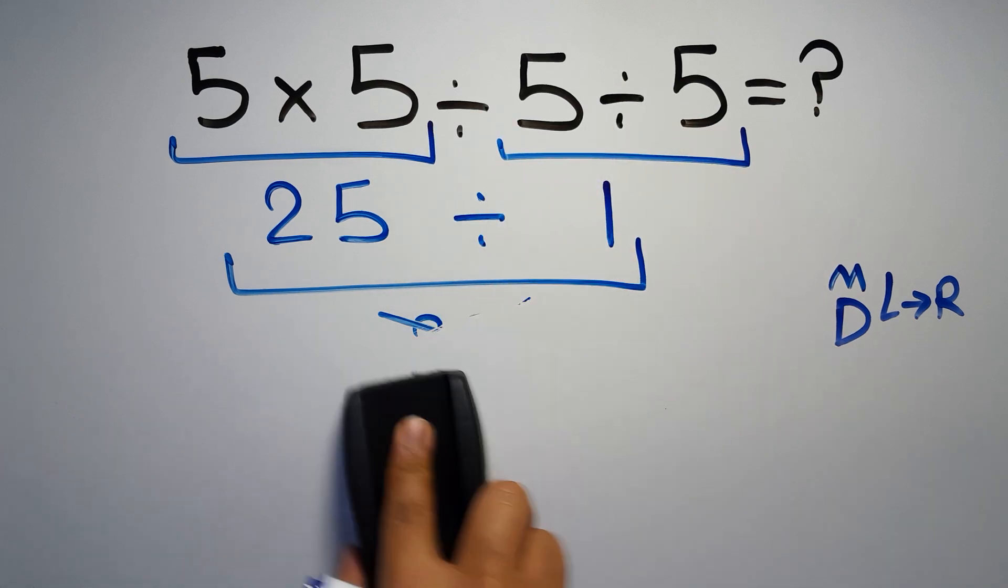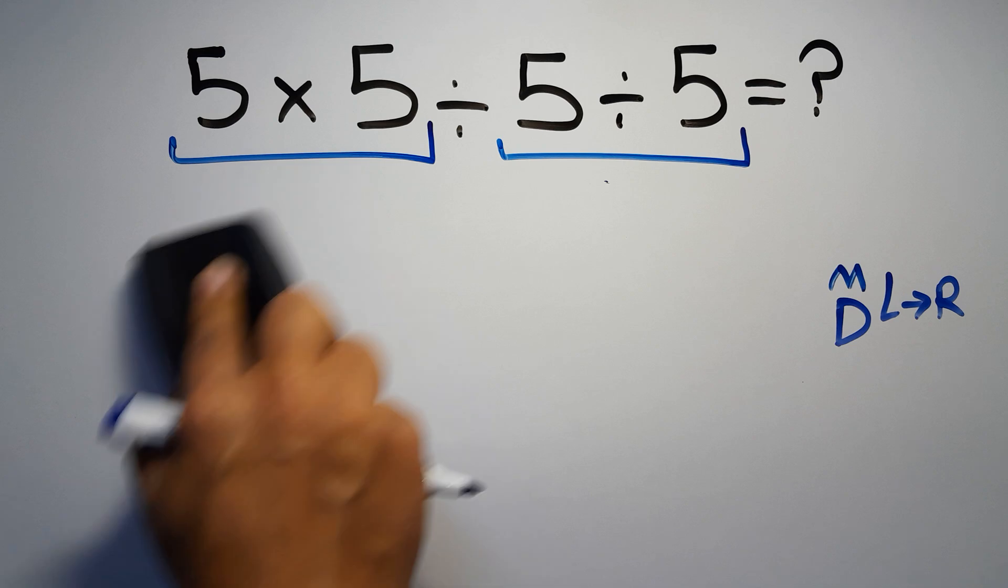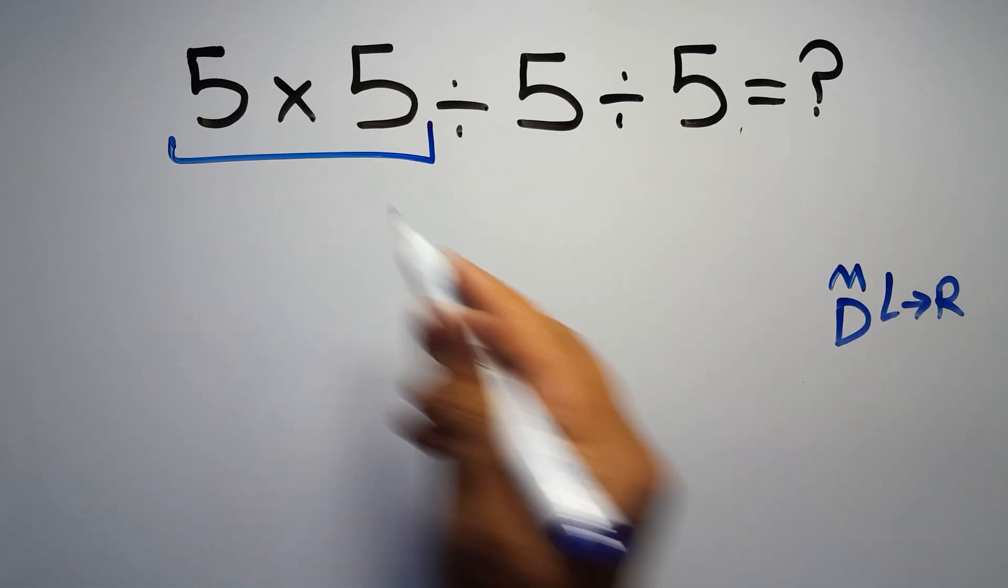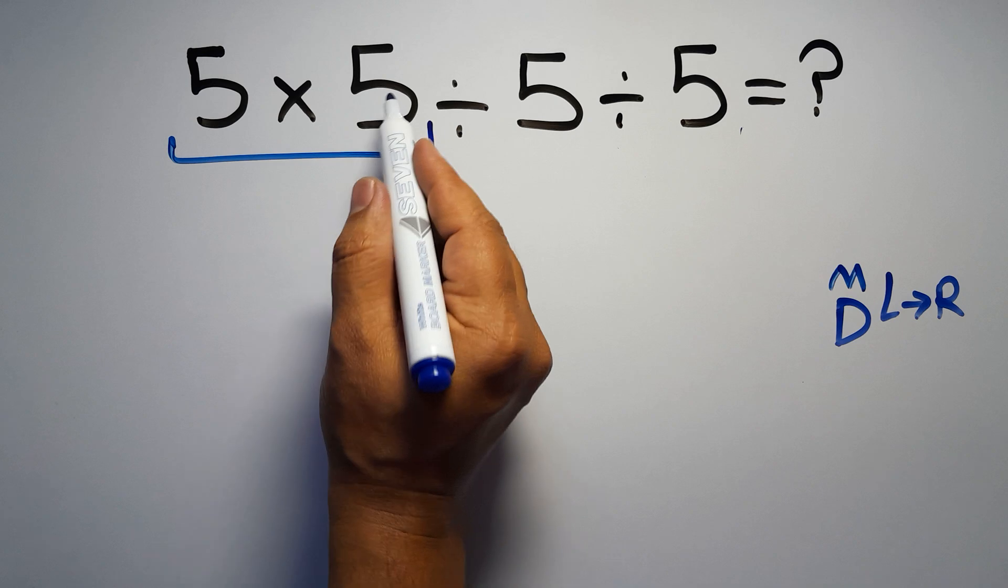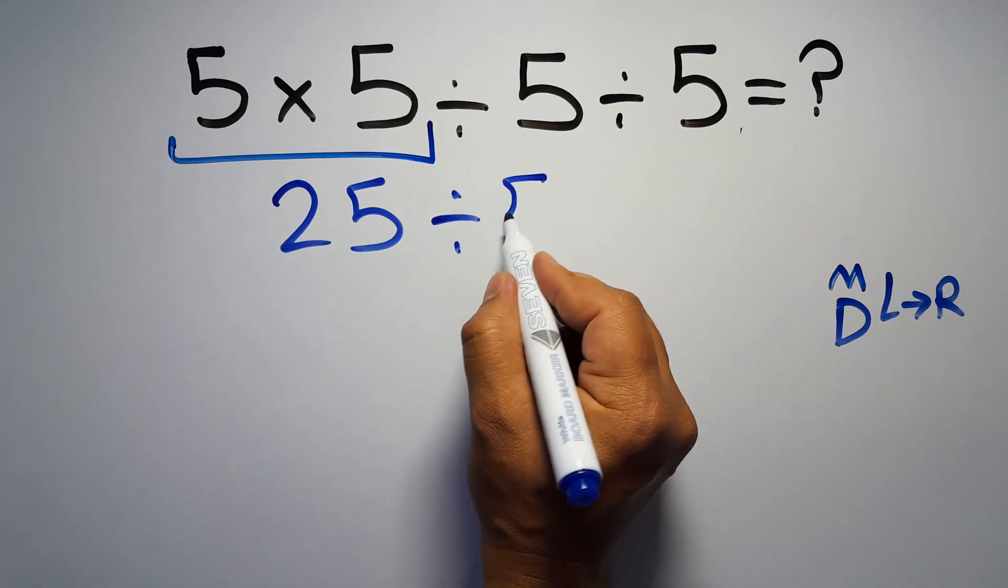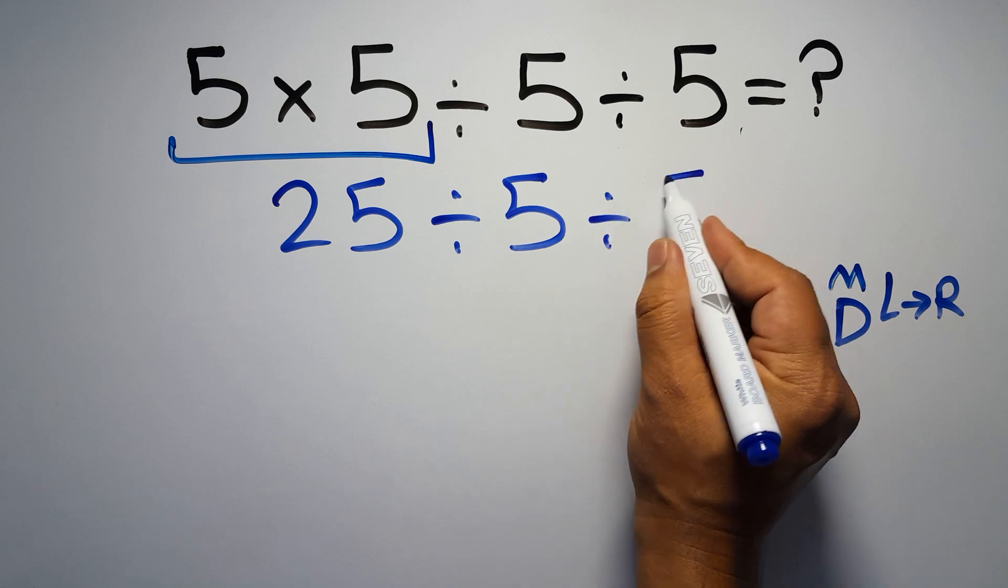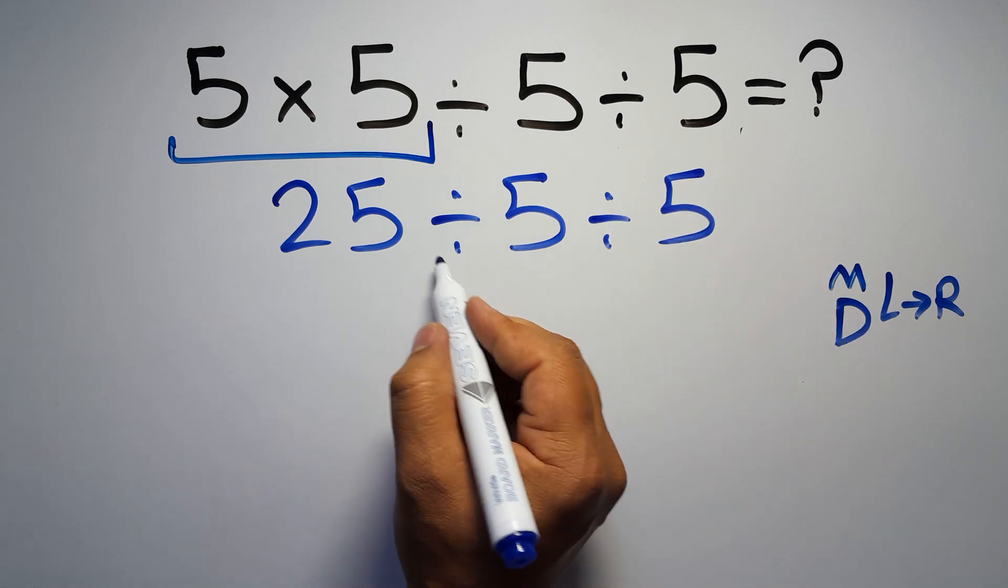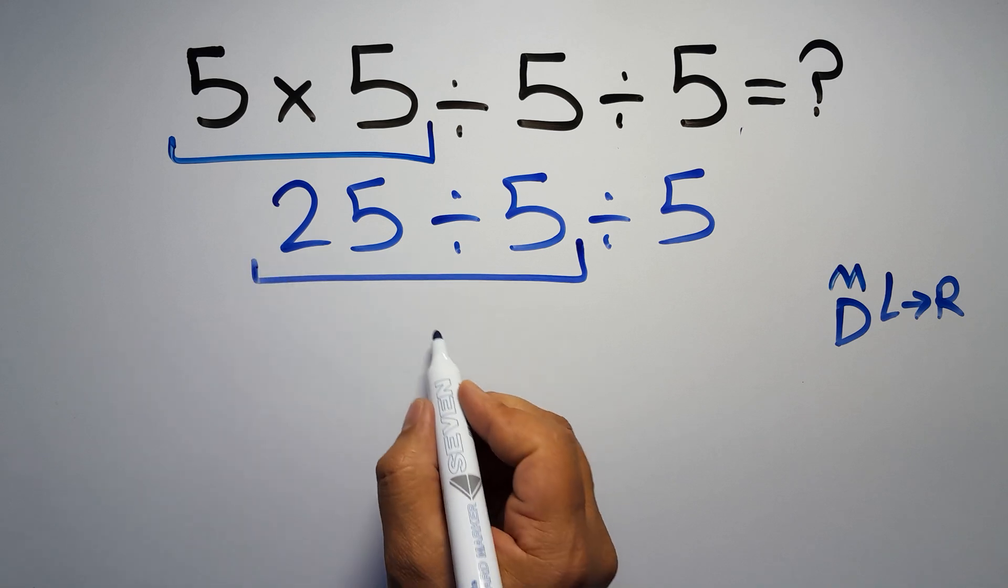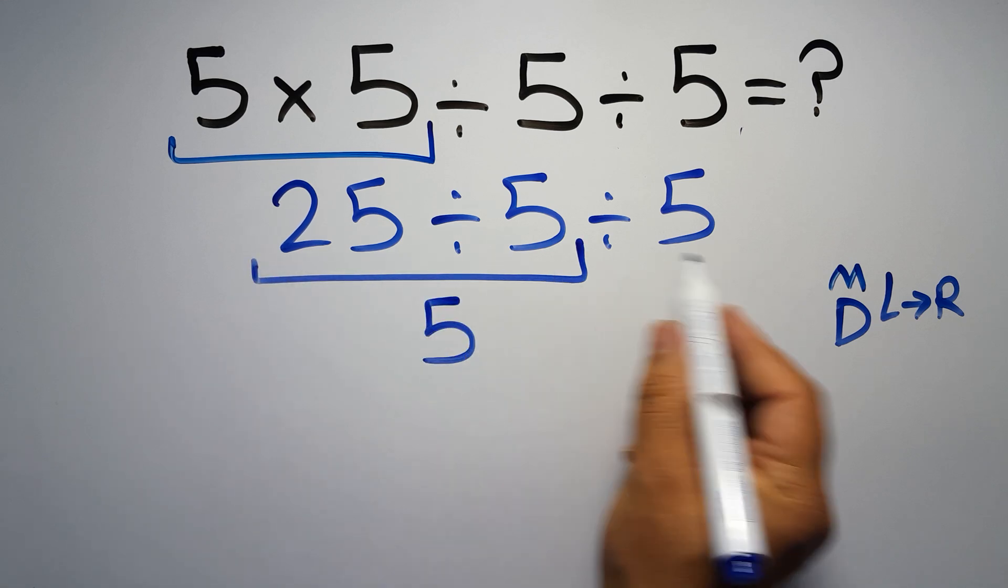First this multiplication: 5 times 5 gives us 25. So 25 divided by 5 and again divided by 5. Now we have to do this division: 25 divided by 5 is just 5. So 5 divided by 5 gives us 1.